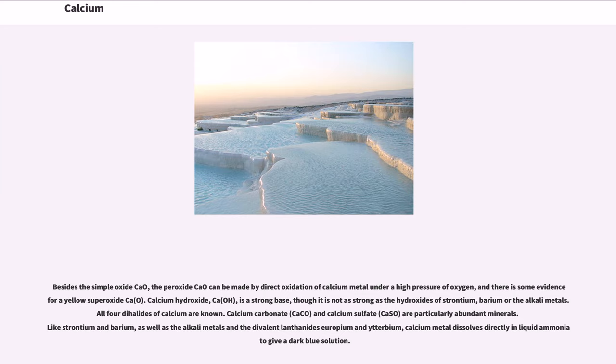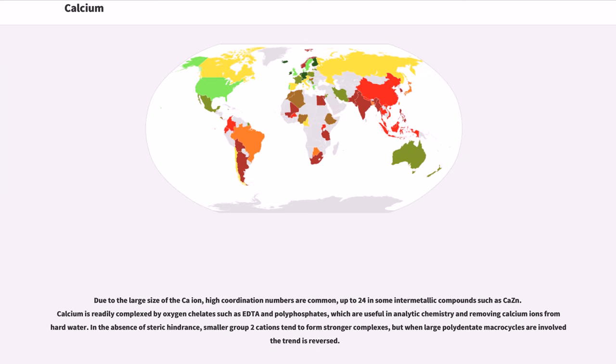All four dihalides of calcium are known. Calcium carbonate CaCO₃ and calcium sulfate CaSO₄ are particularly abundant minerals. Like strontium and barium, as well as the alkali metals and the divalent lanthanides europium and ytterbium, calcium metal dissolves directly in liquid ammonia to give a dark blue solution. Due to the large size of the Ca²⁺ ion, high coordination numbers are common, up to 24 in some intermetallic compounds such as CaZn₁₃.